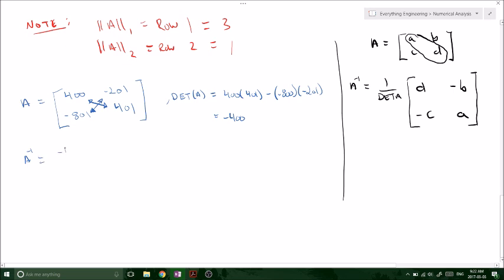So A inverse, -1 over 400. Remember, swap the diagonals and throw a negative in front of the other diagonals. Therefore, A inverse equals this.